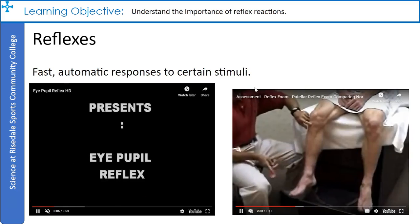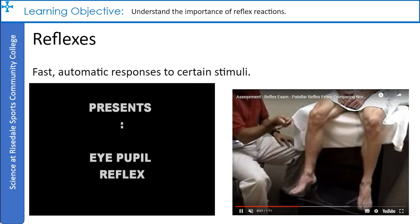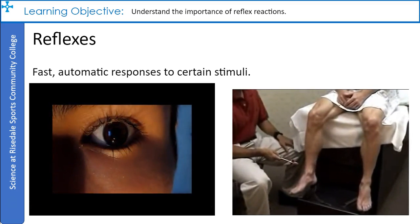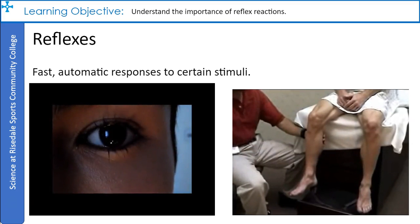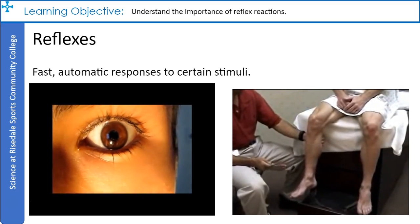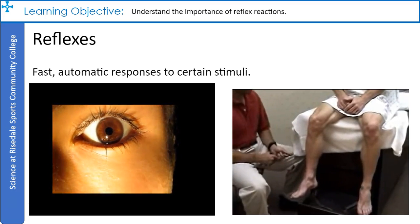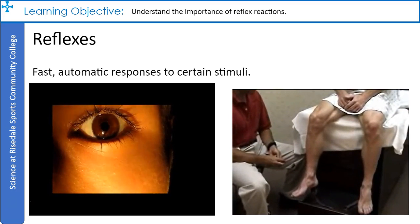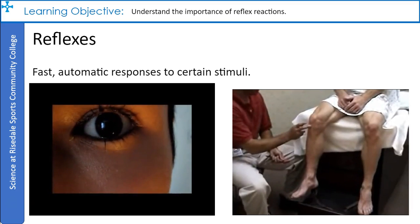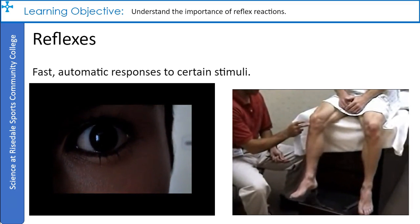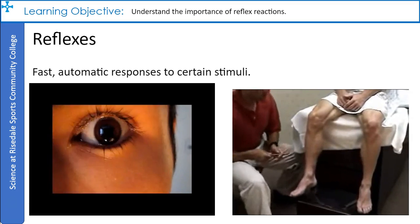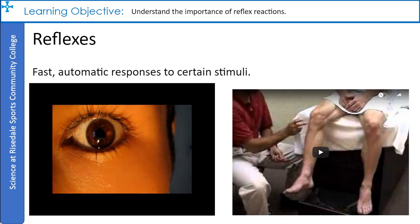Reflexes are fast automatic responses to certain stimuli. They bypass your conscious brain completely — when a quick response is essential your body just gets on with things. Reflexes can reduce your chances of being injured, although they have other roles as well. For example, if someone shines a bright light in your eyes, your pupils automatically get smaller. This means that less light gets into your eyes, which stops them getting damaged.